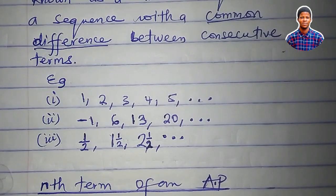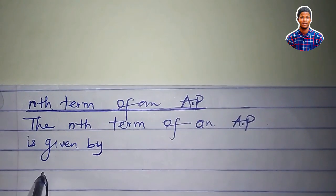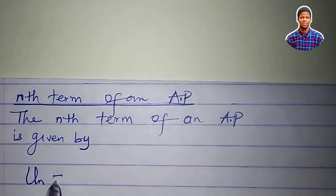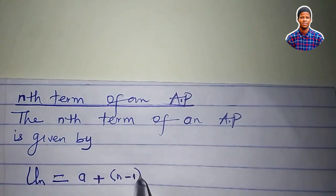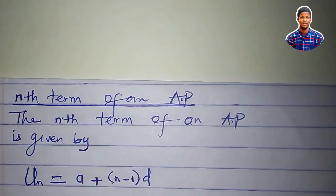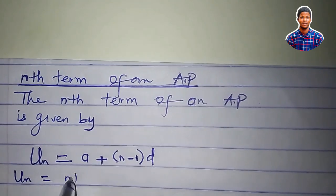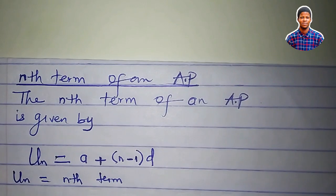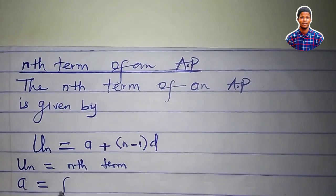Let us talk about the nth term of an arithmetic progression, which is an AP for short. The nth term of an arithmetic progression is given by the formula: u sub n equals a plus (n minus one) times d. What is u sub n? u sub n is the nth term. For example, first term, second term, third term, 101st term.